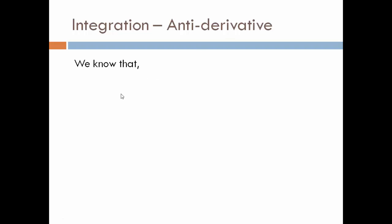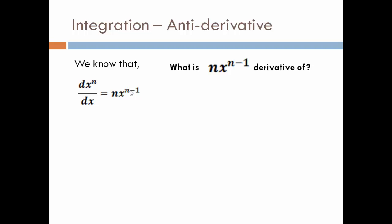First of all, we know that d/dx of x raised to n is n times x raised to n minus 1. Let us reverse that equation in the form of a question: what is the anti-derivative of n times x raised to n minus 1? Definitely, your answer is going to be x raised to n.